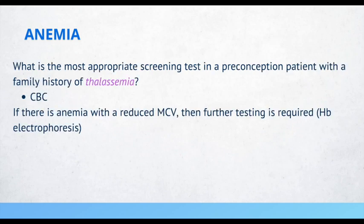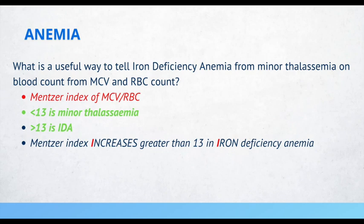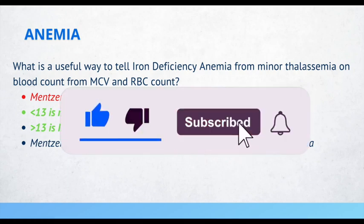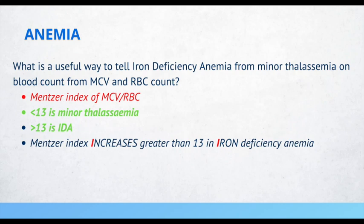What is the most appropriate screening test in a preconception patient with a family history of thalassemia? A complete blood count. If there is anemia with a reduced MCV, further testing is required such as hemoglobin electrophoresis. If a patient presents with mixed clinical features of iron deficiency anemia and thalassemia, one way of distinguishing between these conditions is by calculating the Mentzer index. If it's less than 13, this is thalassemia minor; if it's greater than 13, it's iron deficiency anemia. You calculate this by dividing the MCV by the red blood cell count.